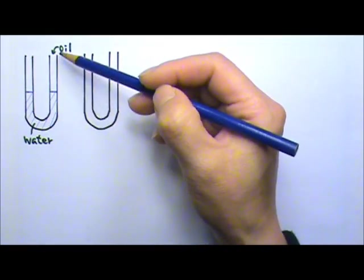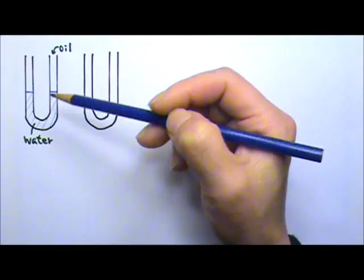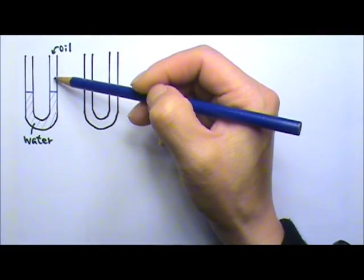Let's say we have a U-shaped tube with some water inside. I then pour some oil into the right side of the tube.